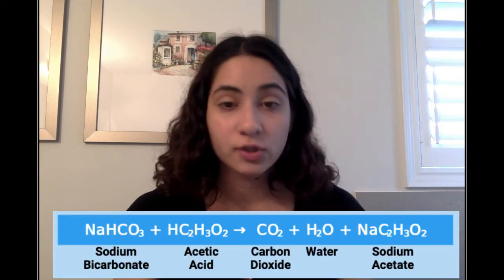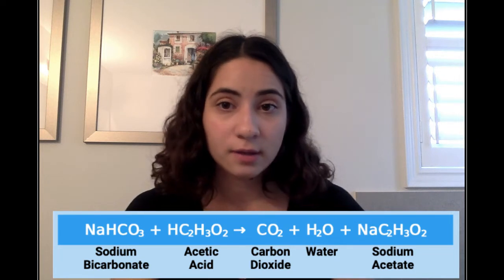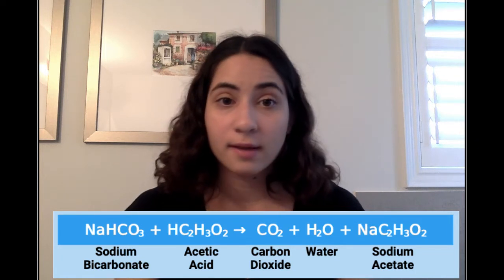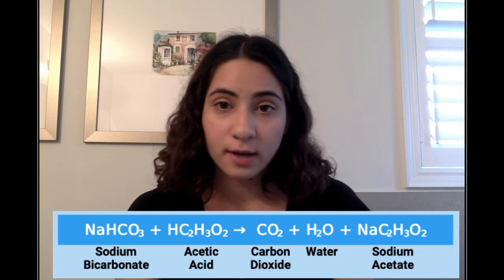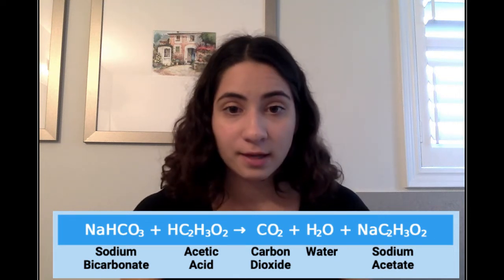When ketchup and baking soda come into contact with each other, the reaction is as follows. Sodium bicarbonate, which is the baking soda, and acetic acid, which is inside the vinegar inside ketchup, reacts to form carbon dioxide, water, and sodium acetate. The solid baking soda was placed in liquid vinegar of the ketchup, producing carbon dioxide gas, which is evident because of the formation of bubbles in the foaming mixture.